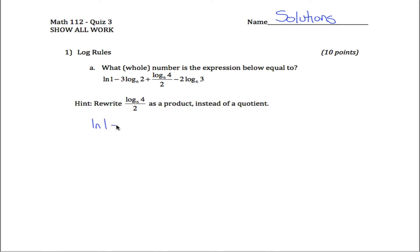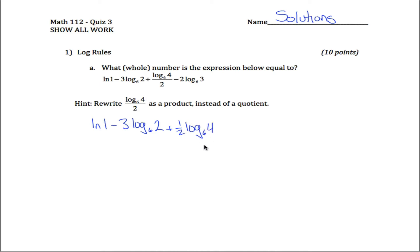The way you can do that: we'll leave everything else the same, but instead of log base six of four divided by two, you can think about it as one-half times log base six of four, and then there's this negative two log base six of three.